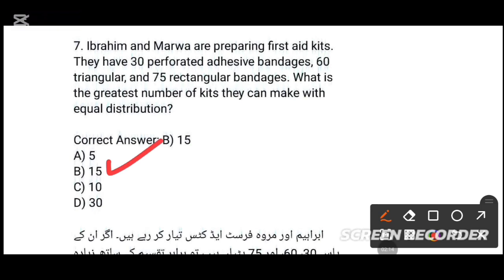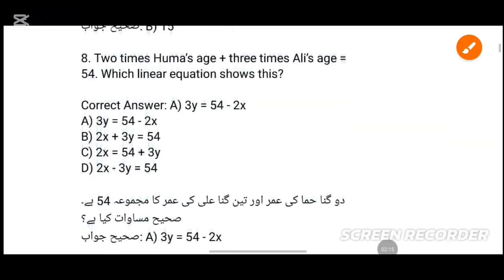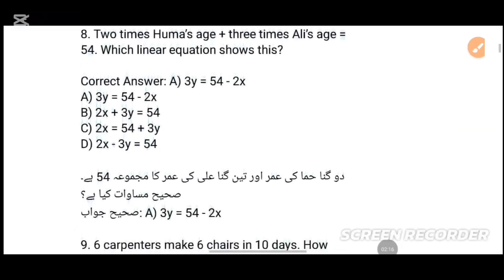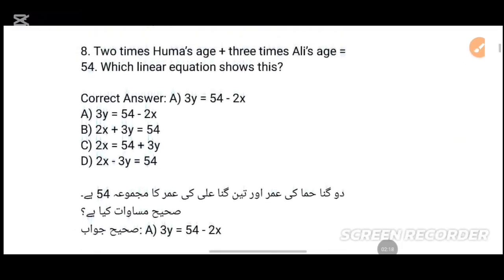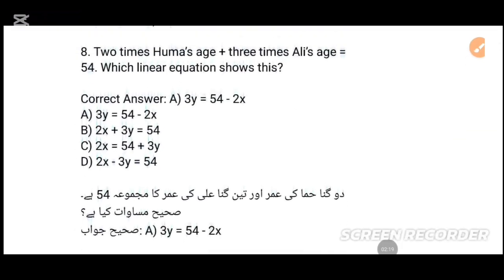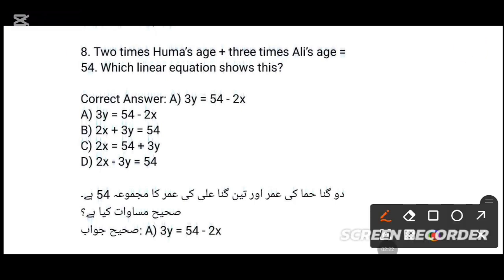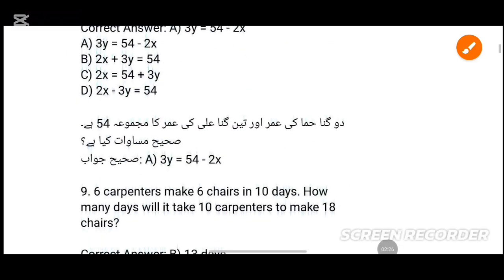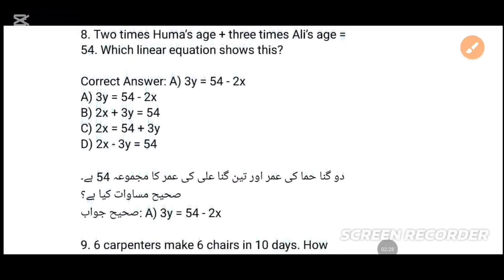MCQs number 7: Ibrahim and Mawa are preparing first. MCQs number 8: Two times boom, a age plus three times reader — which neighbor question shows that? Option B is the answer — tick that option.